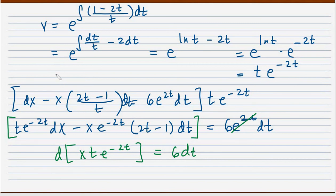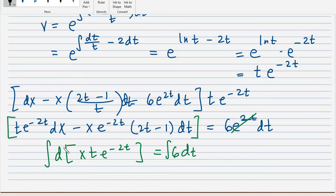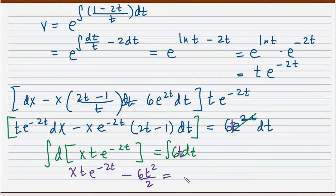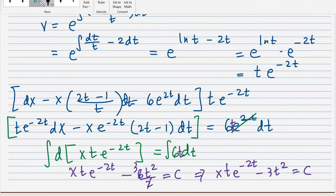Integrating both sides, my answer will be x·t·e^(-2t) equals — note that the right side should be 6t dt after accounting for the t factor, so integrating gives 6t²/2. Simplifying, the final answer is x·t·e^(-2t) equals 3t² plus c.